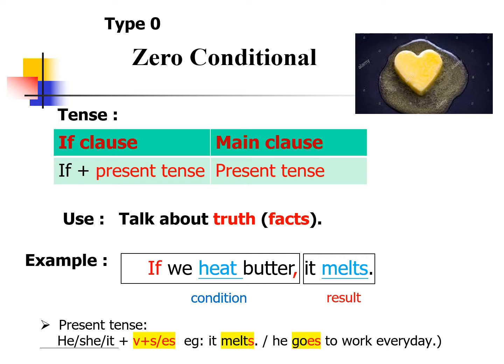The first thing I would like to remind you is: whenever you see the if clause, we use present tense, and in the main clause we use present tense as well. When we use type zero, the sentence talks about the truth or a fact. For example: if we heat butter — that is the condition — the result is it melts. It's always true.